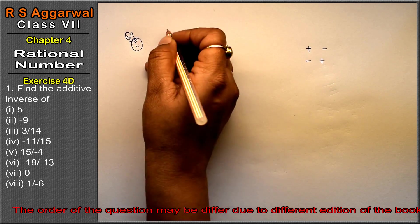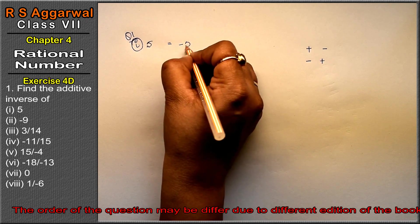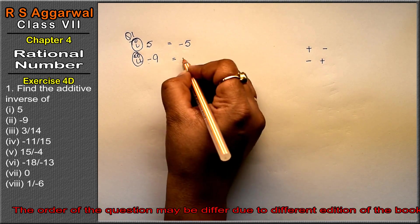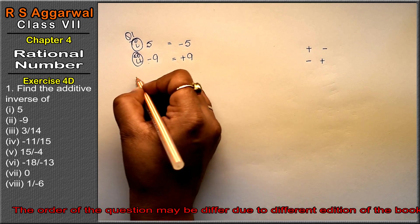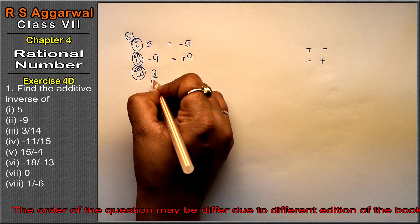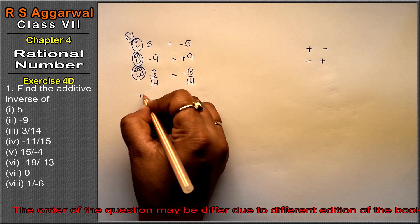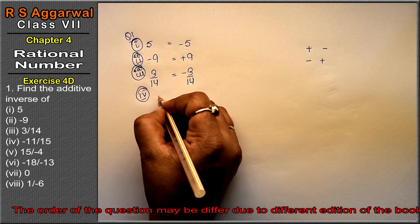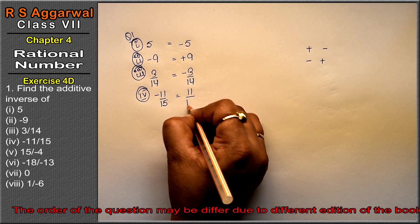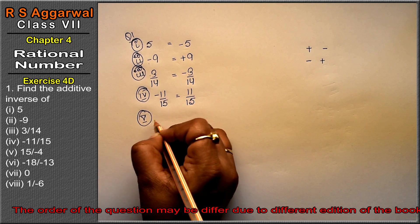First part is 5, so its additive inverse is minus 5. Second part: minus 9 has a minus sign, so it becomes plus 9. Third part: 3 upon 14 is positive, so it becomes minus 3 upon 14. Fourth part: minus 11 upon 15 has minus sign, so it becomes positive 11 upon 15.